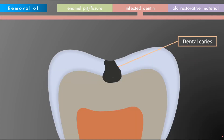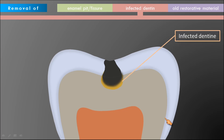The second factor to consider is the removal of infected dentine. Clinically we can see the appearance of dental caries. Histologically, below the clinical dental caries we can see a layer of infected dentine. Infected dentine is rich in microorganisms and whatever the cost, the infected dentine must be removed. If we do not remove it, it may remain and progress as secondary caries.